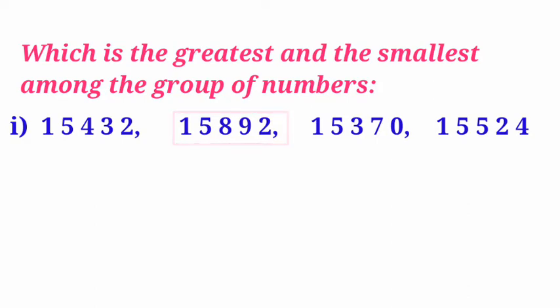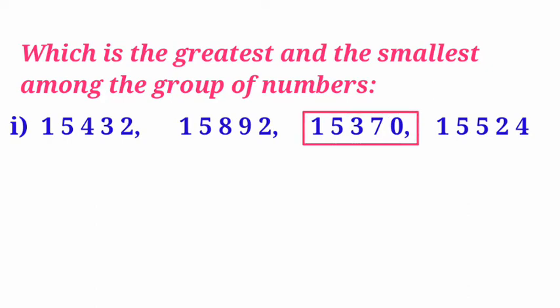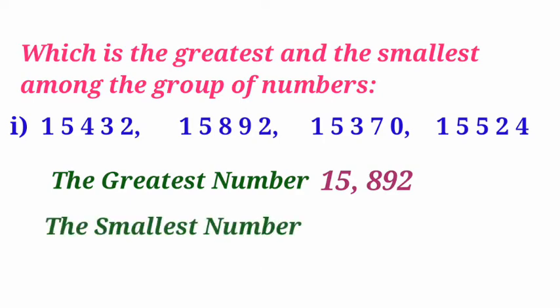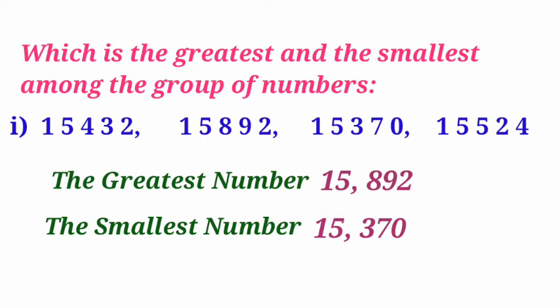At the same time, three is the smallest digit among all of them. So the greatest number is 15,892, and the smallest number is 15,370.